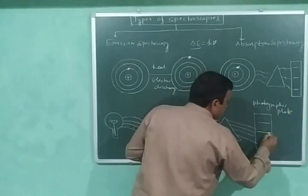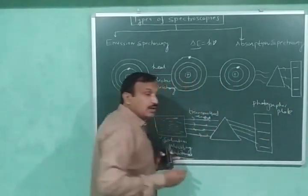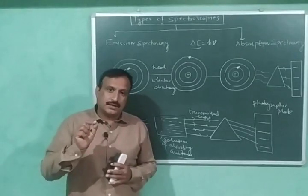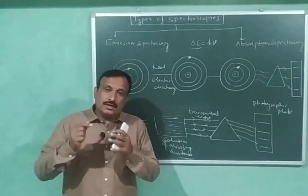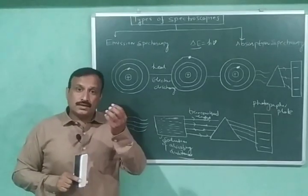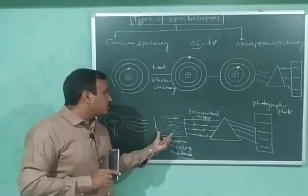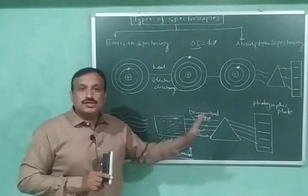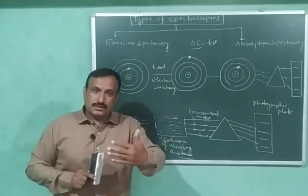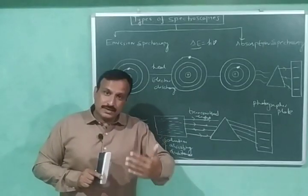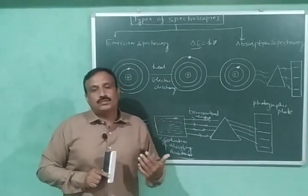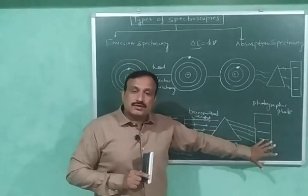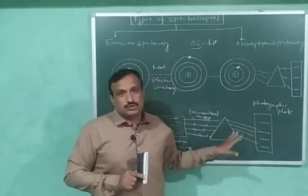The radiations coming out of the prism are recorded on a photographic plate. In this case we obtain dark lines on the photographic plate — not bright lines. These dark lines correspond to the radiations absorbed by the substance, because those wavelengths are missing from the transmitted light. This is called the absorption spectrum of the substance.